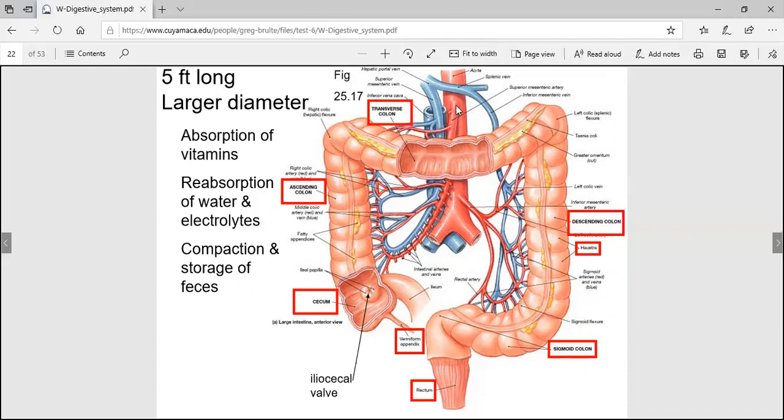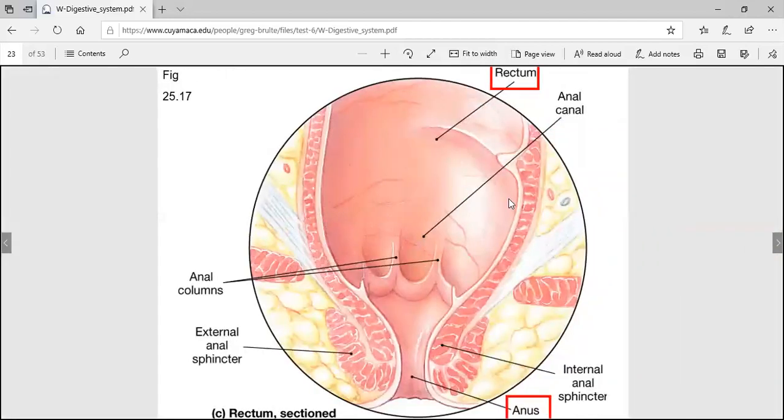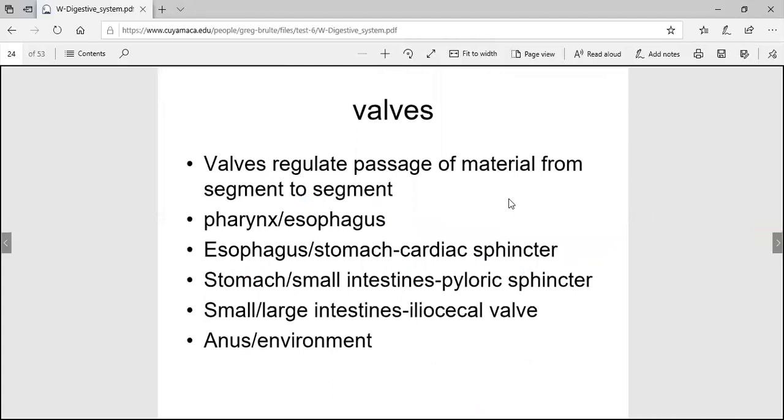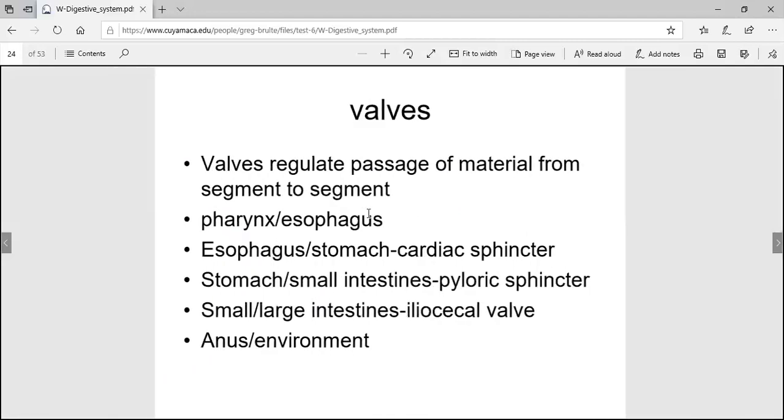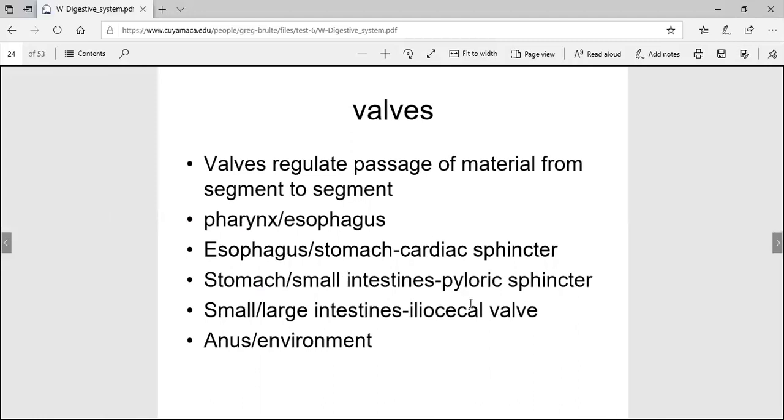This is showing the mesenteric arteries, the superior mesenteric and inferior mesenteric, showing how that's going to some of these intestines. They're flowing through mesenteries. We talked about mesenteries a while back.